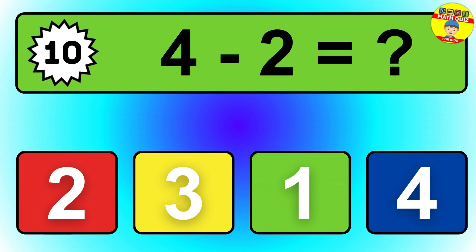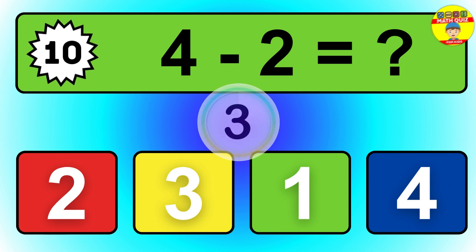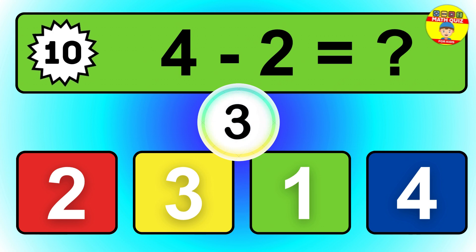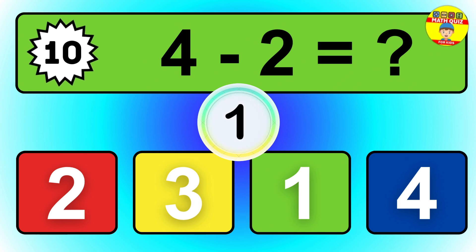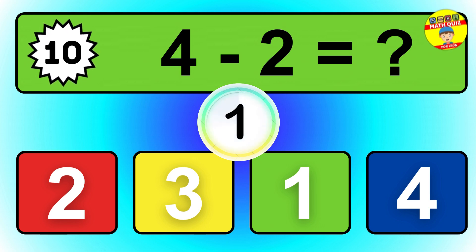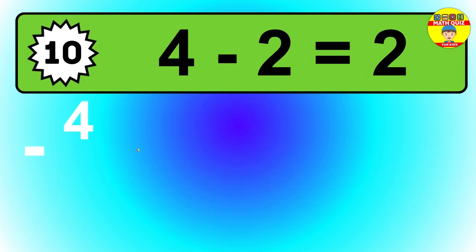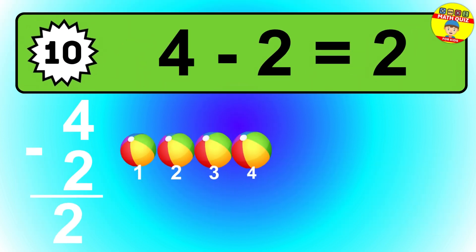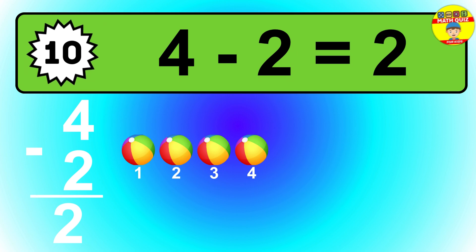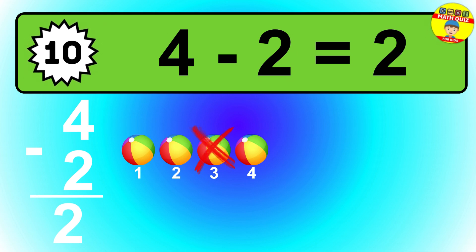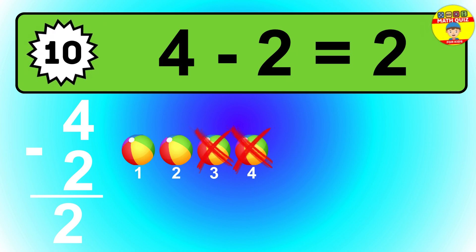Question 10. 4 minus 2 equals what? So the answer is 4 minus 2 is 2. Let's count it: 1, 2.